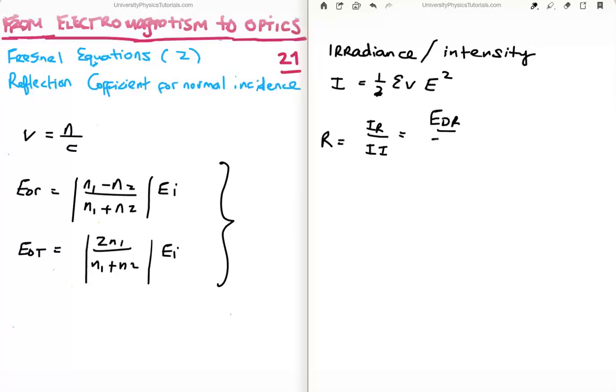Take the reflected and the incident electric fields, take the ratio and square it, and what we'll find is you get your reflection coefficient as (n1 - n2)/(n1 + n2), and then square it. This is the reflection coefficient which everybody would be familiar with at normal incidence.